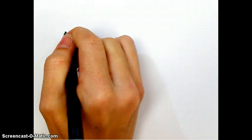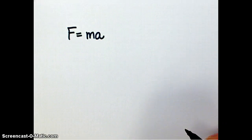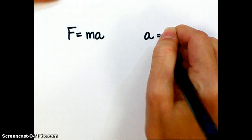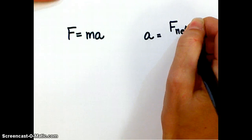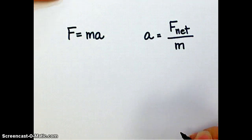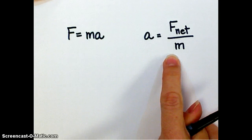We talked a bit Friday about force equals mass times acceleration, which is our basic formula that Newton's second law gives us. We rearranged it and talked about the fact that a lot of times it's more helpful to have it arranged this way, because a lot of times we want to know what an object is doing — is it accelerating, and if so, how much? So this is a more helpful way of using that formula sometimes.